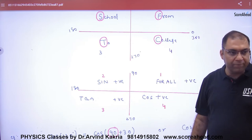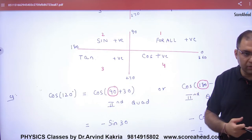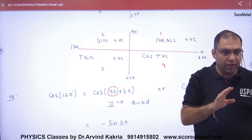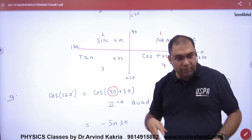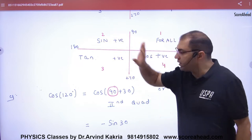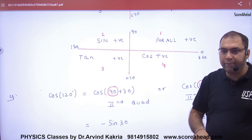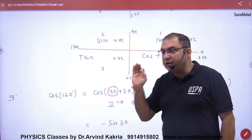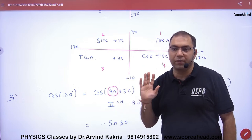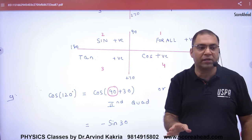What does that mean? It means that if you have any angle between 90 and 180 — imagine 120 degrees — then 120 is in the second quadrant. I told you that sine is positive in the second quadrant. So if you have sin(120), the answer will be positive. But if you have cos(120) or tan(120), the answer will be negative.